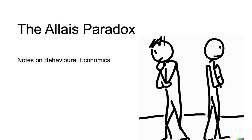The Allais Paradox is one of the most famous anomalies in expected utility theory. The paradox was first identified by Maurice Allais in 1953. It emerges from the pattern of response to two pairs of bets. The following example comes from Kahneman and Tversky, 1979.